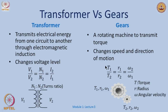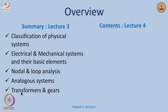To summarize what we have done: we classified physical systems, concentrated on mechanical and electrical systems and their basic elements, and used conservation laws — nodal and loop analysis — to derive system dynamics. We established a beautiful analogy between electrical and mechanical systems and learned about energy transformation devices like transformers and gears. Next, we will look at more physical examples including cruise control of a car, transformer analysis, the simple pendulum system, and predator-prey models.